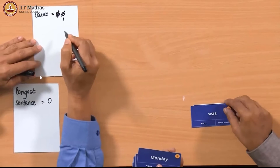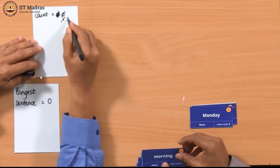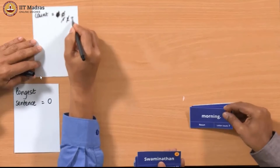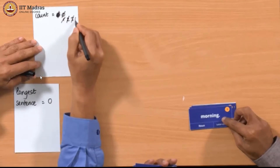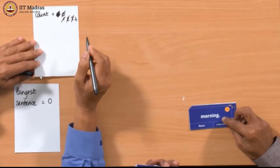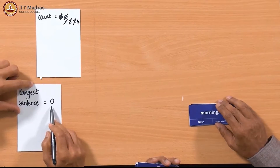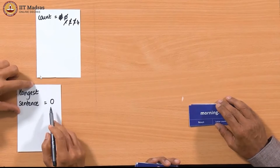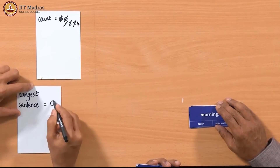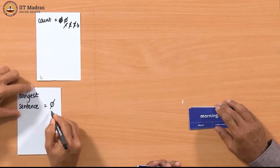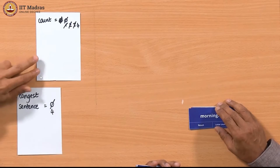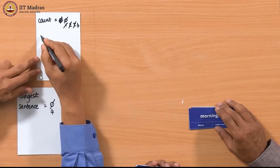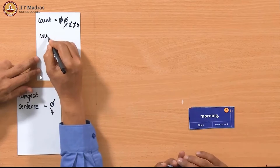count was updated for every card in a sentence. When a sentence was finished, longest_sentence is compared against the count. And if count is greater than longest_sentence, longest_sentence was updated.